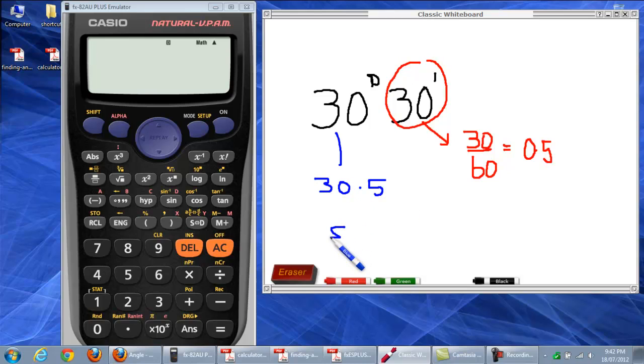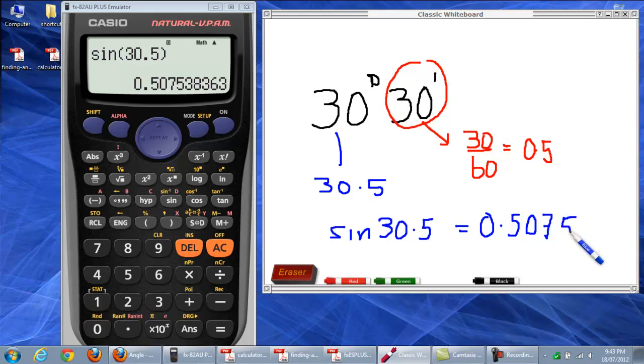So, if we want to work out now, sine, excuse me for my terrible handwriting, but I'm using a mouse to write on a whiteboard so you can imagine. It's not the best. So, 30.5. Sine 30.5. Sometimes it's good to close the brackets. And there's the answer. Notice the answer, 0.5075. So, let's just leave it at four decimal places.